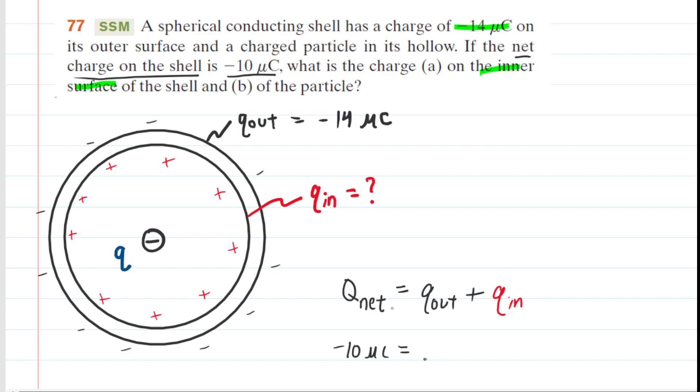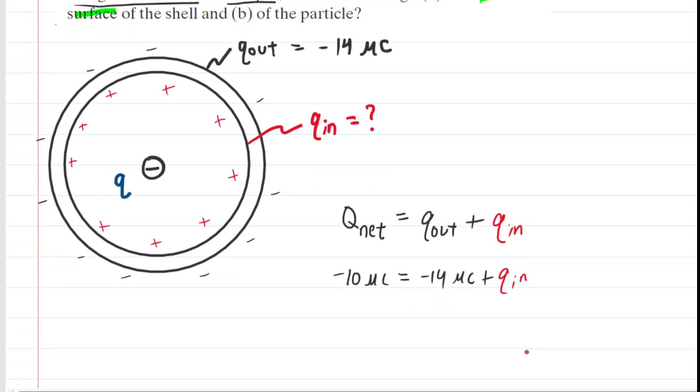We know the outer charge is negative 14 microcoulombs, and then we're going to add that to this unknown Q in. And you can see how easy it is to solve for the Q in, or the charge on the inner surface of the conducting shell, because if we just add 14 to both sides, we can see that 4 microcoulombs is going to be the charge on the inner surface of this conducting shell. So that is the correct answer for part A. Q in is 4 microcoulombs.